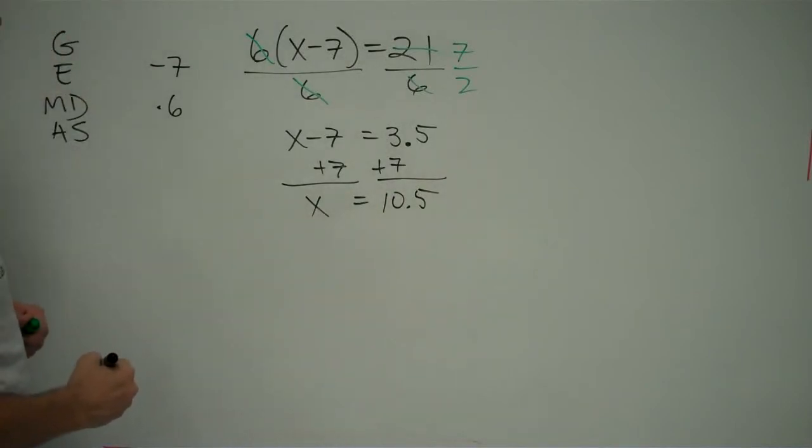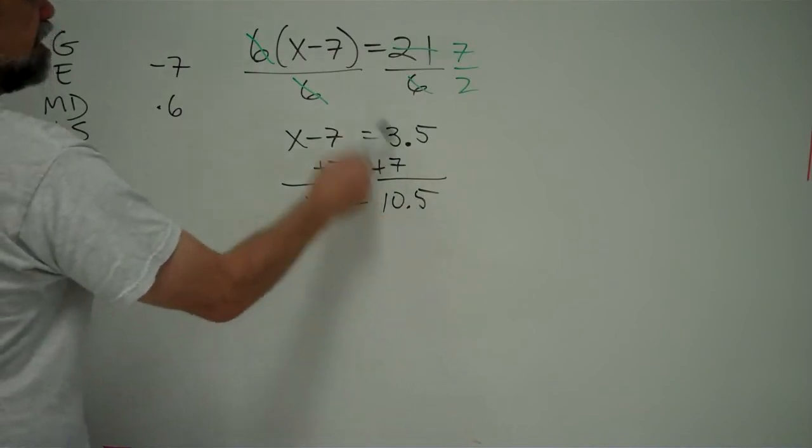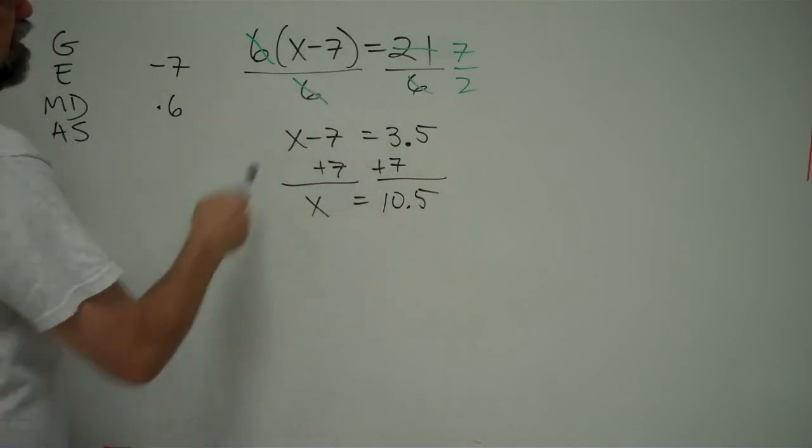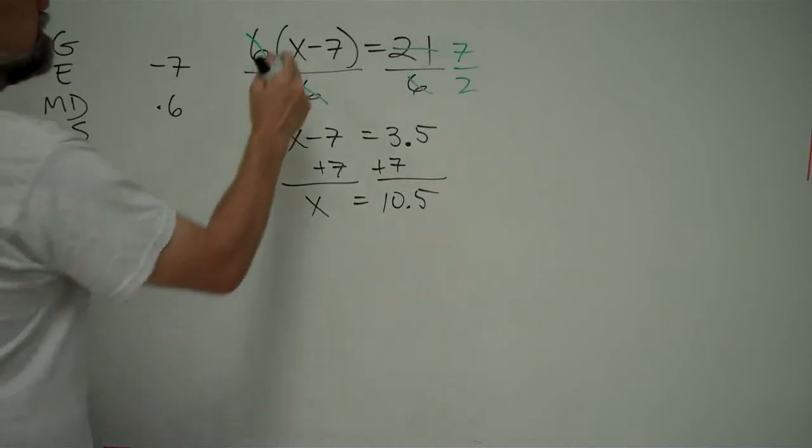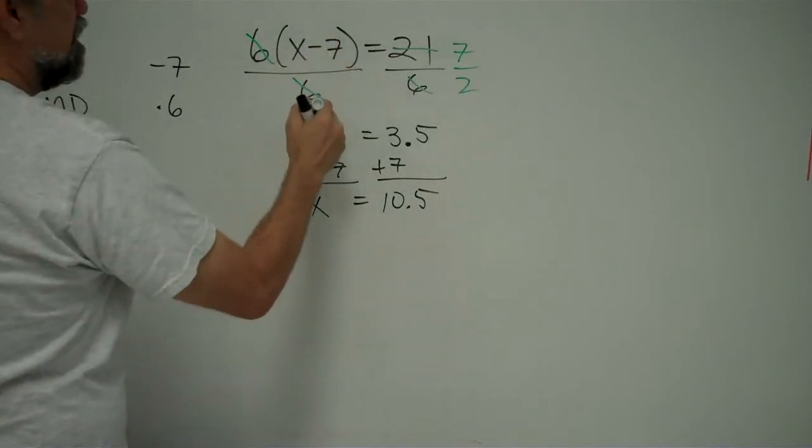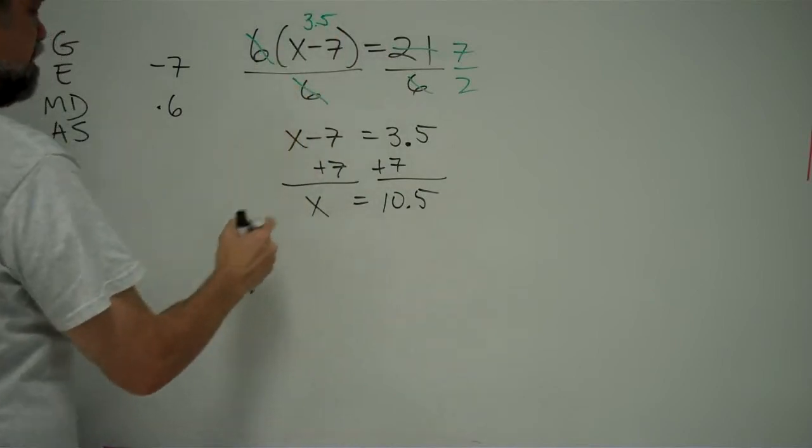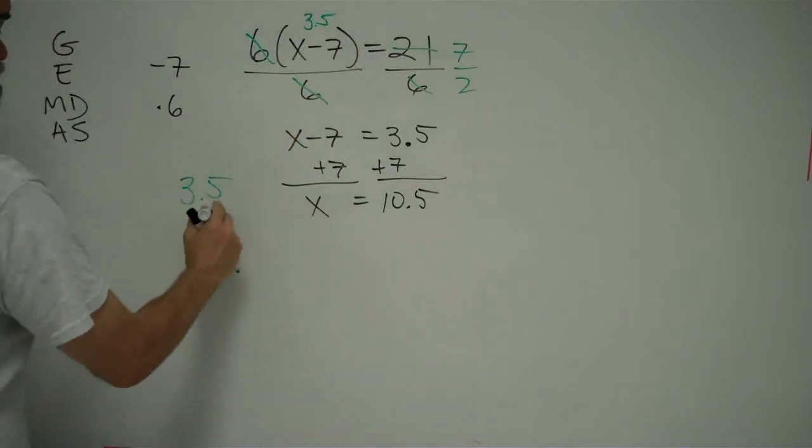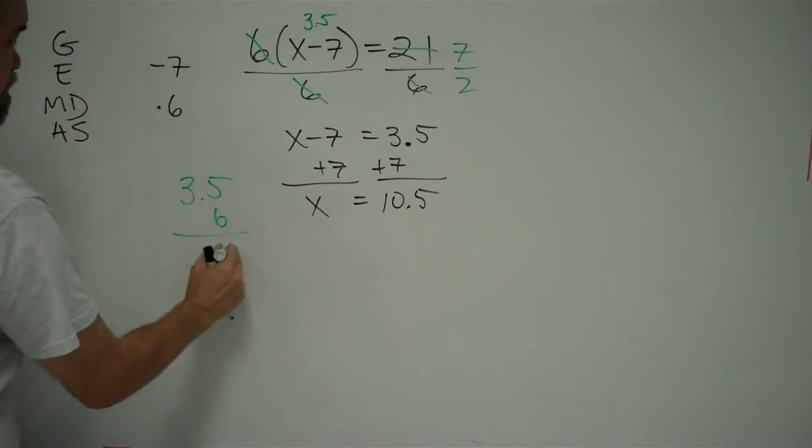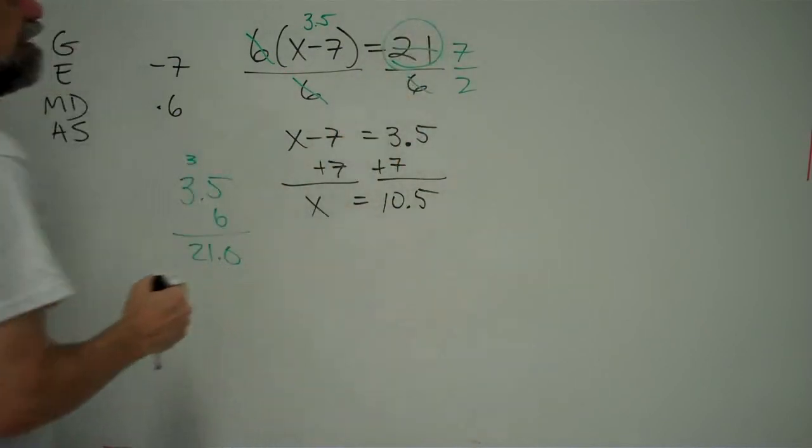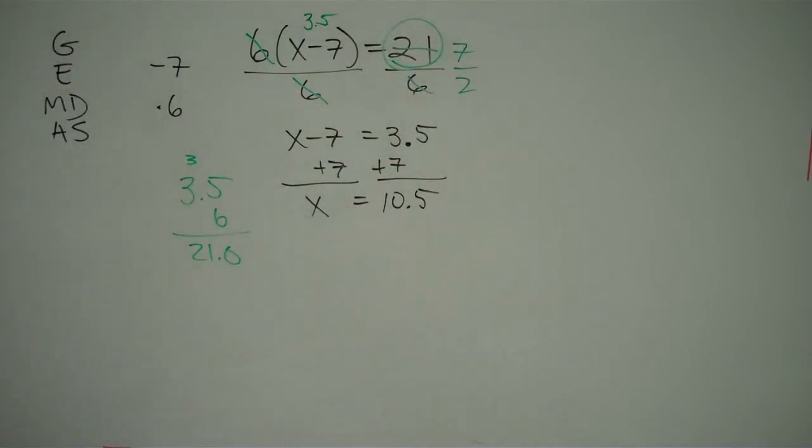Is it true? Well, I don't know. Let's see. Let's take this 10.5. Replace x with 10.5 in our original equation. And 10.5 minus 7 gives us 3.5. And 6 times 3.5. Let's see. It's going to be 30. 18 plus the 3 is 21. 0.0. That's exactly what I was looking for here. 21. So, yes. That also works.